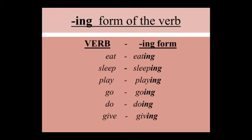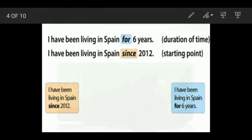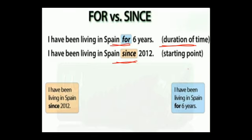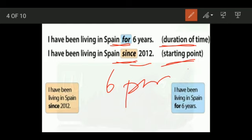Before we begin with the tenses, another important thing to know is the difference between 'for' and 'since.' We will also study this when covering prepositions. 'For' is used when referring to a duration of time — for a few months, few years, few hours, few seconds. 'Since' is used for a starting point — since 2012, since 6 pm, since morning — when we know the initial point at which an activity began.